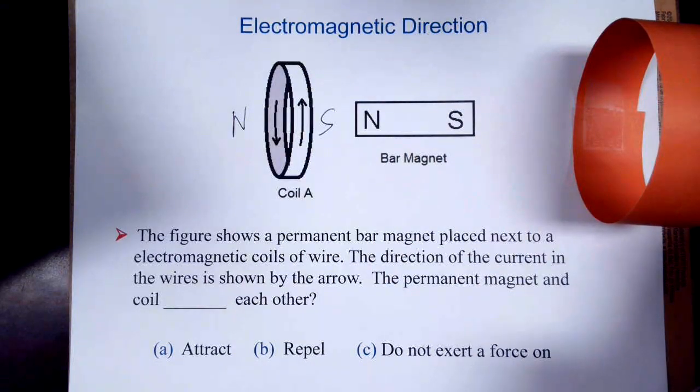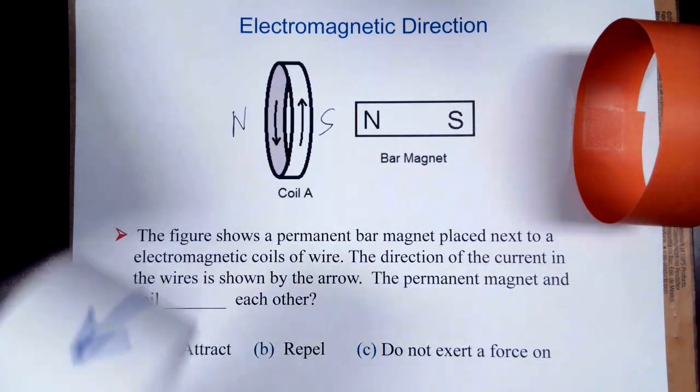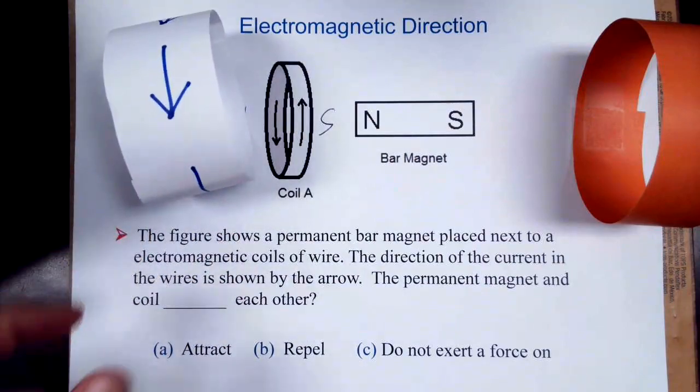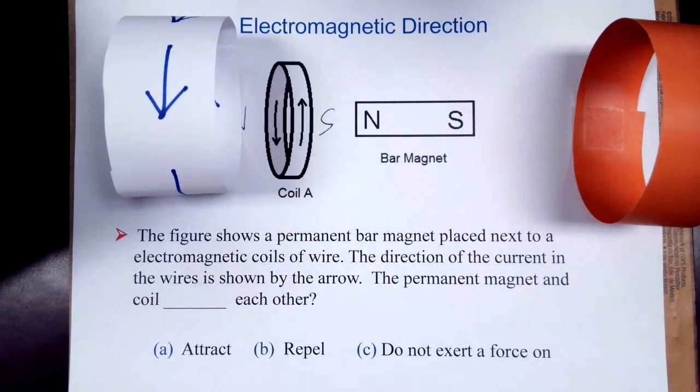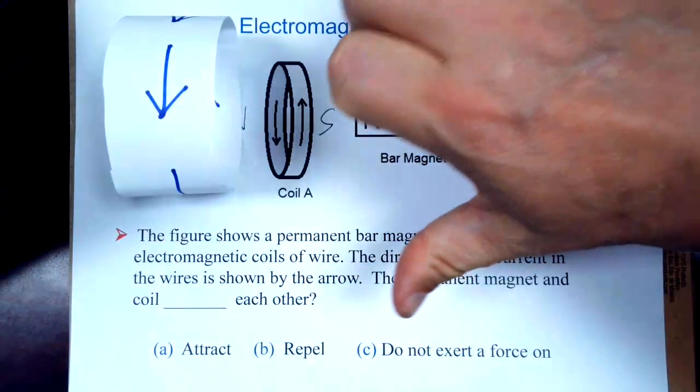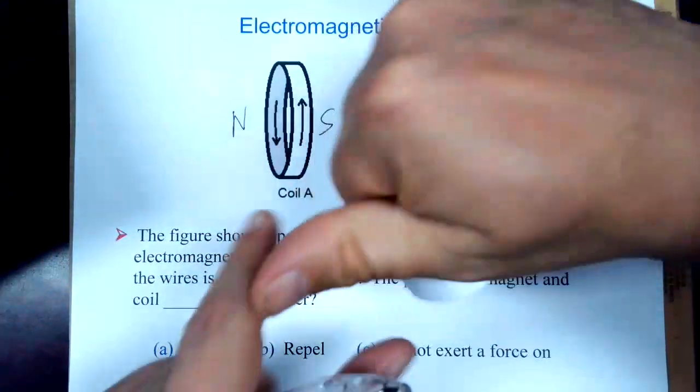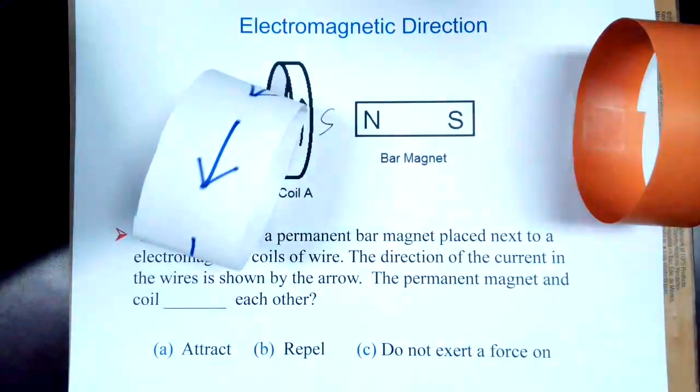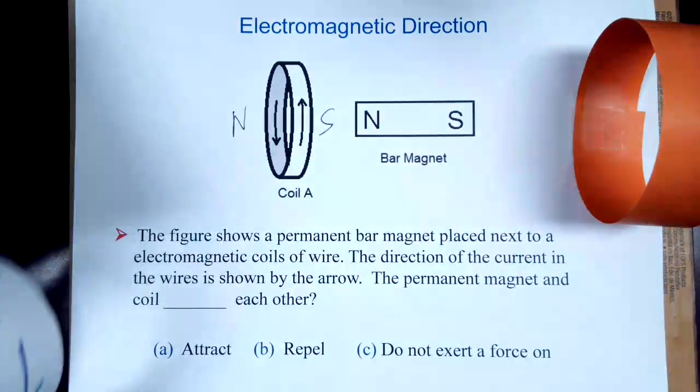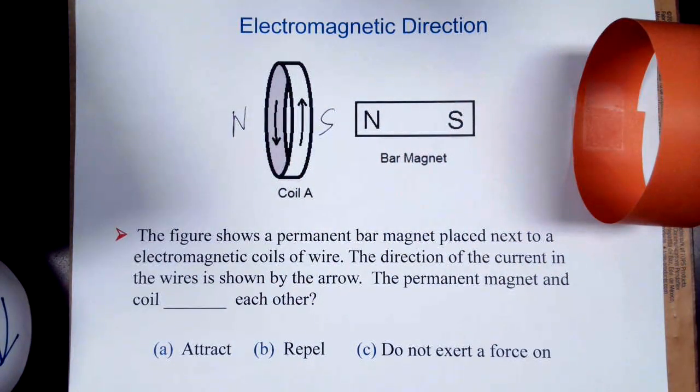If we flip the direction, if I took my coil here and now turned it the other way, in this case, the thumb would be pointing down. It would go through the coil, so the magnetic field would point to the right. That means the right-hand side would be the north pole, and the left-hand side would be the south pole. In that case, they would repel each other.